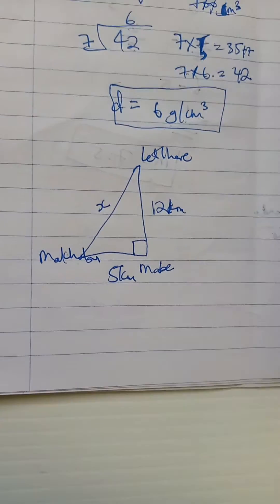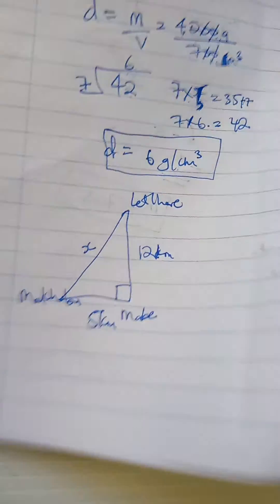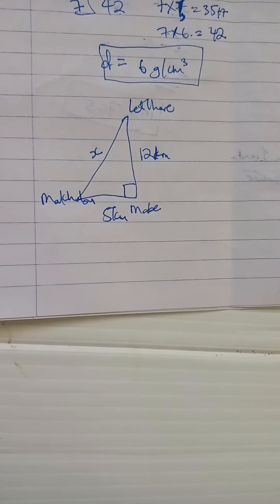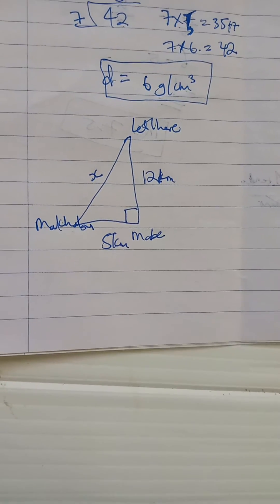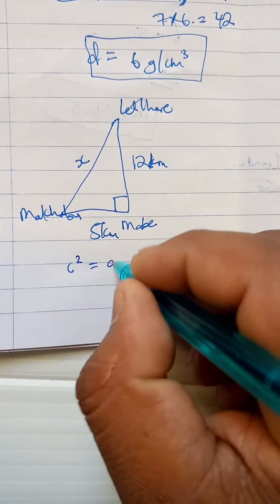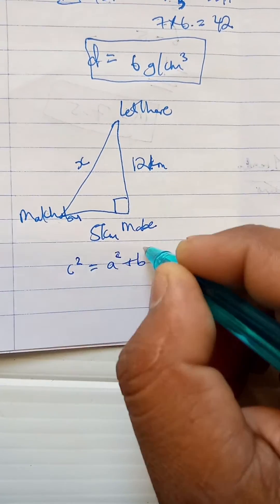Straight up, you can see that this is a Pythagorean theorem problem. We know that the Pythagorean theorem says c² equals a² plus b².